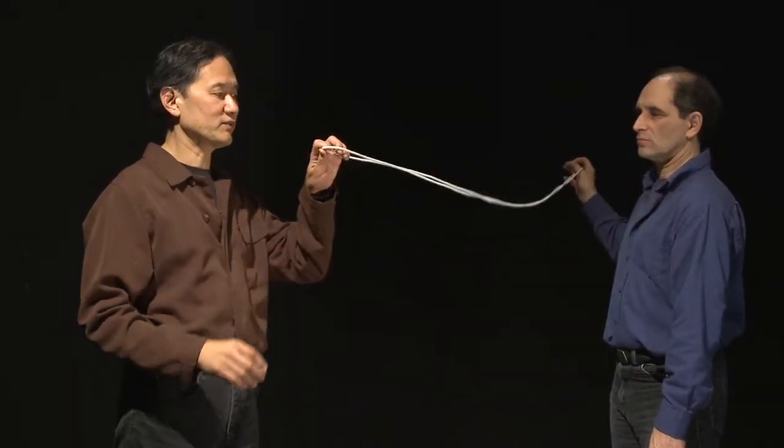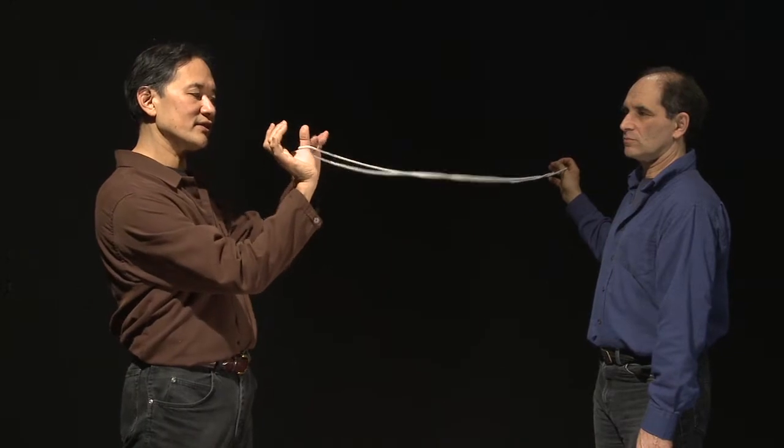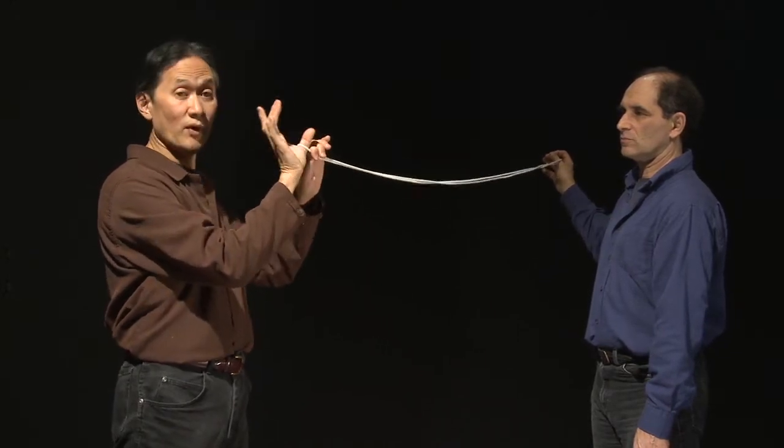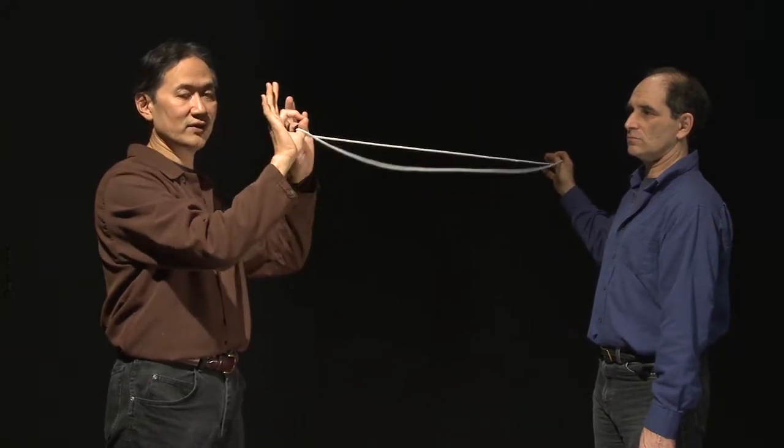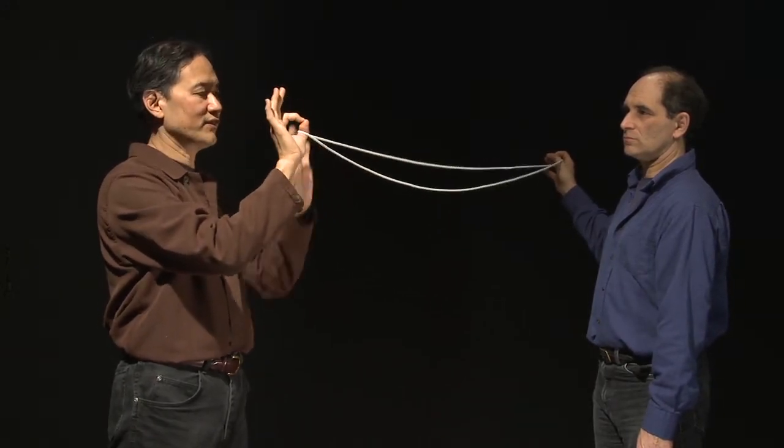Here's a tetrahedron with two people and a loop of string. Put your thumb underneath the loop. You both do the same thing throughout this and make a loop like this so the string can slide freely through your fingers.